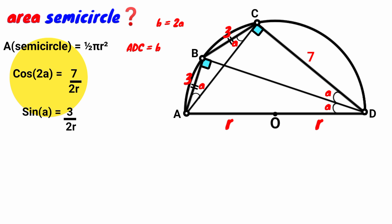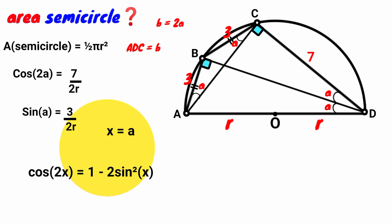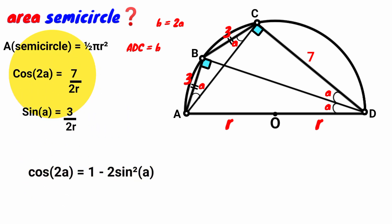From trigonometry, there is a double angle identity: cos 2x = 1 − 2 sin²x. Let x = A and substitute: cos 2A = 1 − 2 sin²A. We have the value of cos 2A as 7 over 2R, and we also know sin A = 3 over 2R.